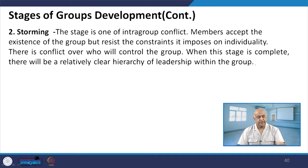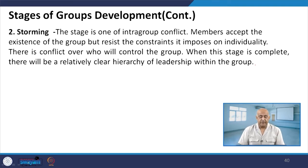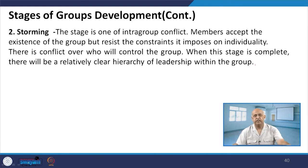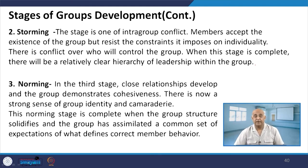Every person coming together with another and forming a group brings their own personality and value systems. Members may accept the existence of the group but resist its constraints — intra-group conflict starts. When this storming stage is complete, there will be a relatively clear hierarchy of leadership within the group. In the storming stage there will be discussion, conflicts, and convincing, and whoever is able to overcome that will emerge as the leader.